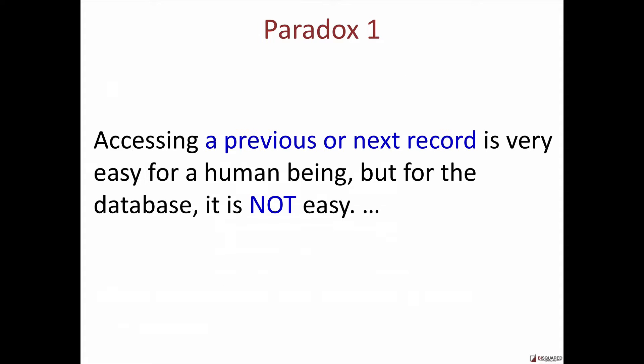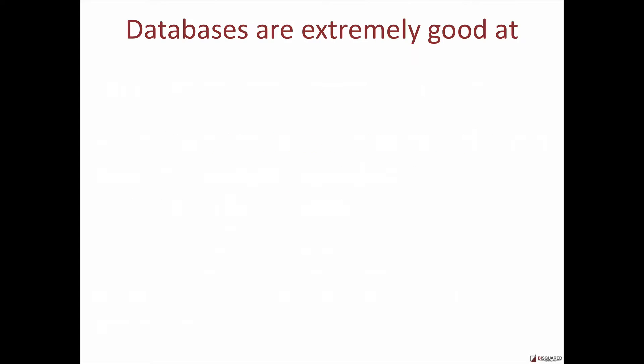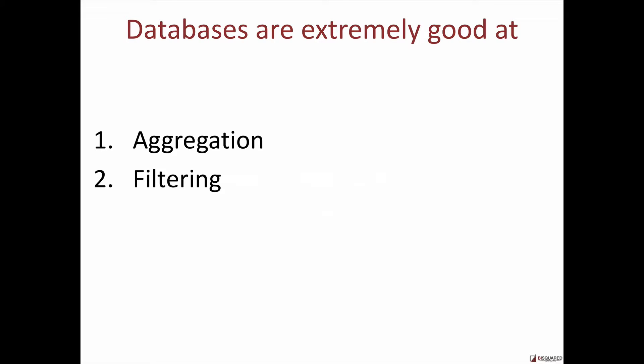So what's the real difficulty? The difficulty is that accessing a previous or next record is very easy for us, but for databases it's not easy. What are databases really good at from the reporting perspective? I'll say three things: aggregations — they can take a million records and produce one value like total sales, average sales, minimum sales, maximum sales. They're also extremely good at filtering and very good at sorting.